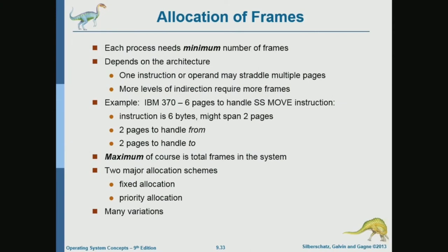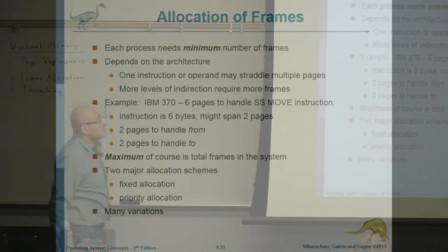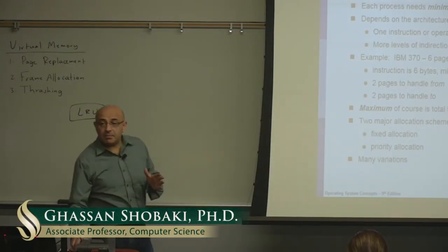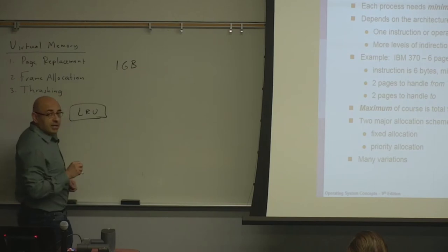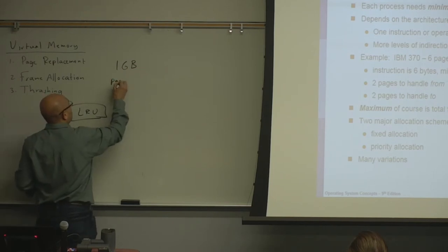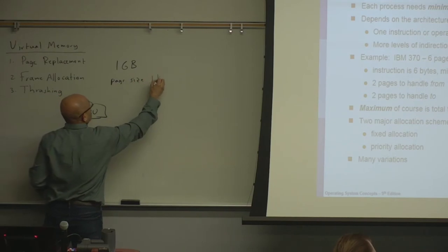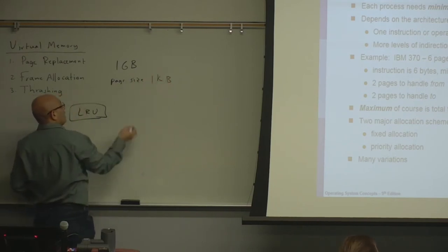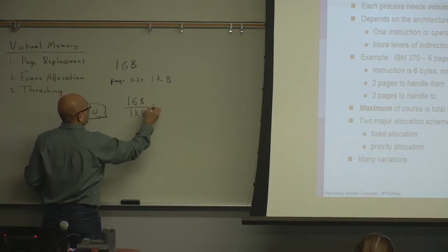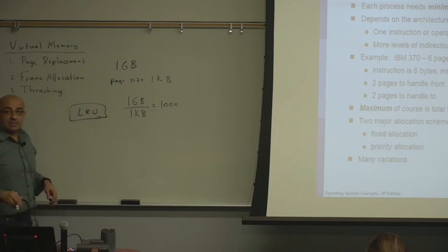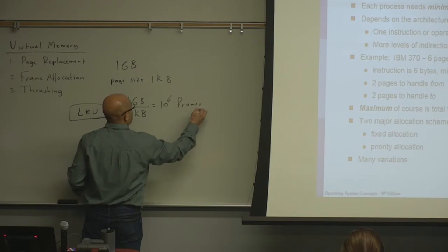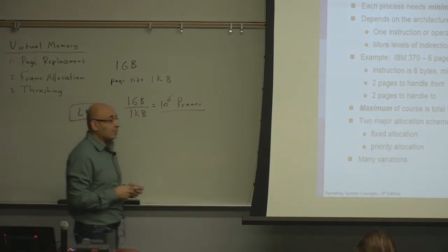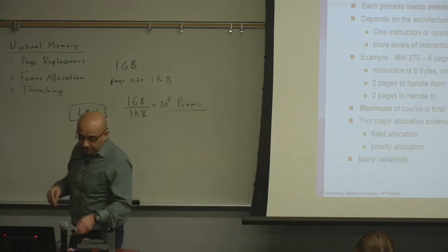We will look into frame allocation — how does the system allocate frames to processes? The system has a certain number of frames. If you have one gigabyte of memory and the page size is one kilobyte, then you have one gigabyte divided by one kilobyte, which is a million frames — 10 to the power of 6 frames. So how do you divide them among the processes you have? This is what we are about to study.